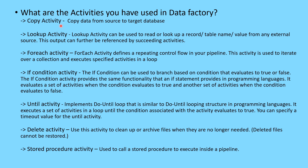Next, the Lookup activity. The Lookup activity can be used to read or look up a record, a table name, or a value from any external source. The output can further be referenced by succeeding activities. So if you are looking for some record, table name, or data from the source database, you can use a Lookup activity to find that value and then reference it to other activities in your pipeline.